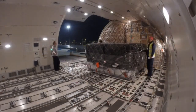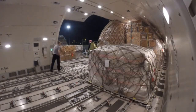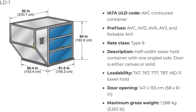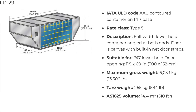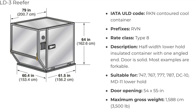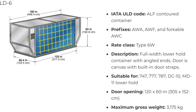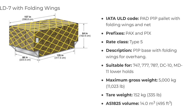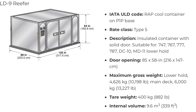There are various ULD container types. You can pause and view the contents of each type as per your convenience. Some of them are: Demi, HMA stall, LD1, LD11, LD2, LD26, LD29, LD29 reefer, LD3, LD3 reefer, LD39, LD4, LD6, LD7, LD7 with angled wings, LD7 with folding wings, LD8, LD9, LD9 M1, M1, M2, M6.